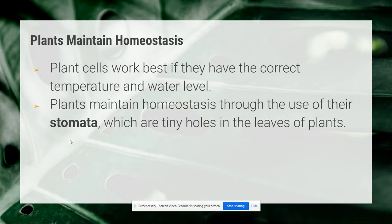So today we're going to talk specifically about plants. Plant cells work best if they have the correct temperature and water level. Plants also maintain homeostasis, but they do it a little differently than humans do. Plants maintain homeostasis through the use of their stomata, which are tiny holes in the leaves of plants that open and close in response to changes in the plant's environment.